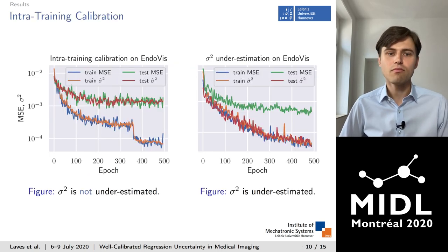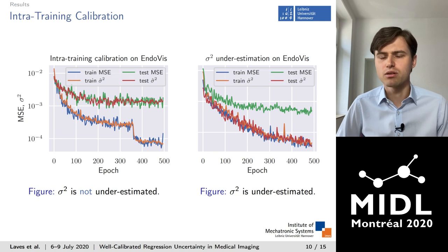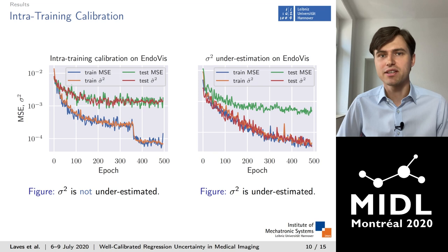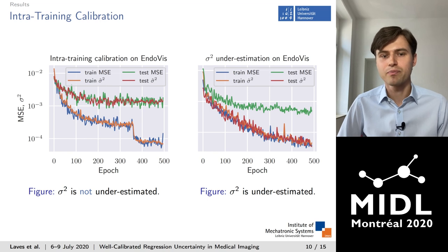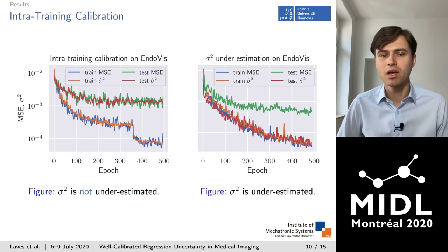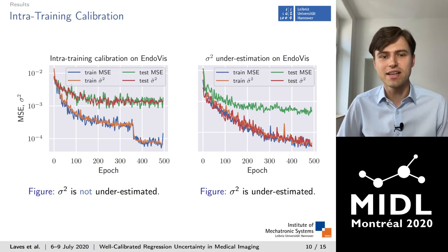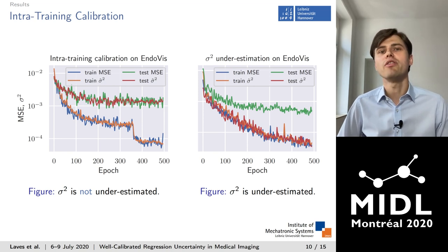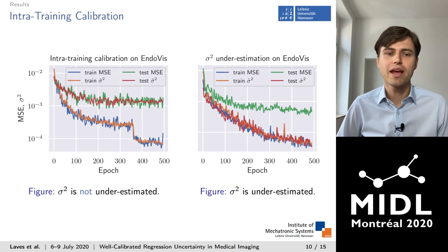The first result is a bit artificial but visualizes how calibration can close the gap between test MSE and uncertainty. We performed sigma scaling to calibrate the aleatoric uncertainty during training. On the right, the uncalibrated case shows the gap between the green and red plots. In the left figure, sigma scaling is used after every epoch using the validation set, and as you can see, the deep model no longer underestimates the uncertainty on unseen test data.